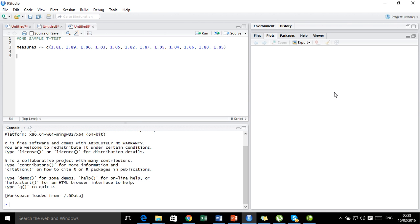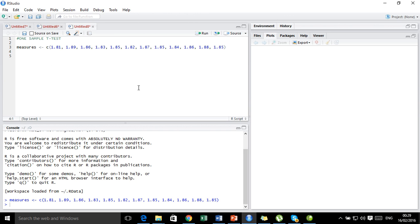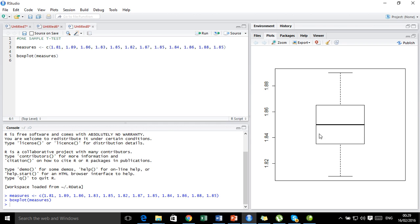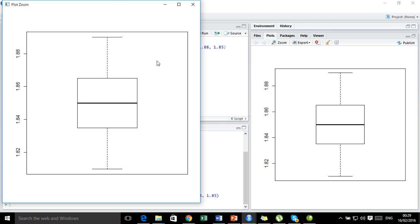So now let us take this problem to R Studio. I have already recorded the measures in a vector and named this measures. Let us run it. Now let us check the distribution of this data using a box plot. And we can see that the data is pretty symmetrically distributed as suggested by the box plot.